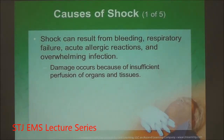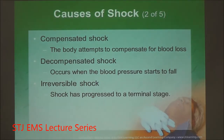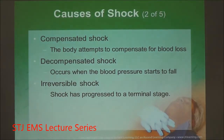All different causes of shock share one common issue: hypoperfusion and deoxygenation of tissue. Early stages of shock are handled by the body through sympathetic tone — that's compensation. Decompensation is when the body can no longer maintain the pressure necessary to perfuse and blood pressure begins to fall. Irreversible shock occurs when body systems begin to fail. More than two body system failures is known as multi-system organ failure or multiple organ dysfunction syndrome.